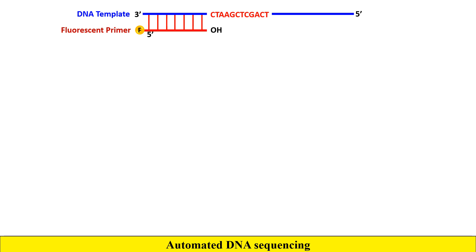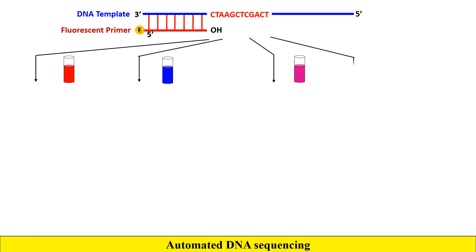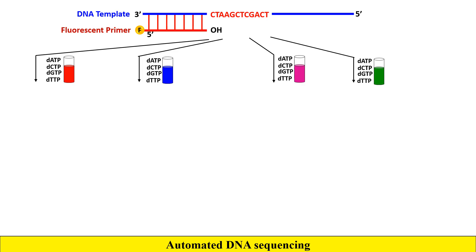Once the primer has been attached, we divide the sample into four test tubes. In each of these test tubes we add all four nucleotide bases: dATP, dCTP, dGTP, and dTTP, because they are required for the synthesis of new DNA.